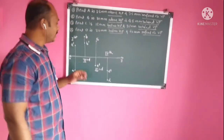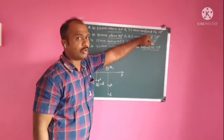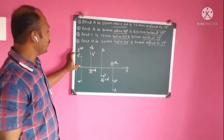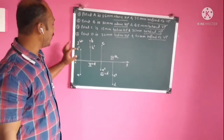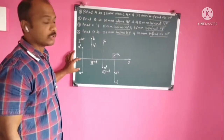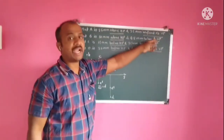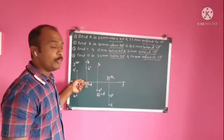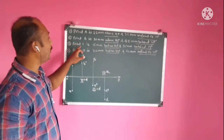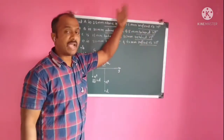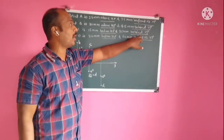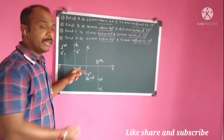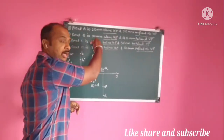As discussed in the last lecture: when a point lies above HP and in front of VP, it is in the first quadrant — its front view is above XY line and top view is below XY line. When the point is above HP and behind VP, it is in the second quadrant — both front view and top view are above XY line. When the point is below HP and behind VP, it is in the third quadrant — front view is below XY line and top view is above XY line.